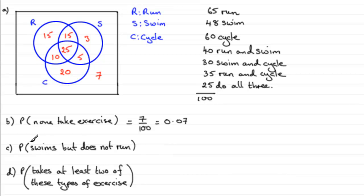And for C, the probability that someone swims but does not run. So if someone swims but does not run, then we've got to look at the swimming circle here. But the people that do not run are going to be these three people and these five people.